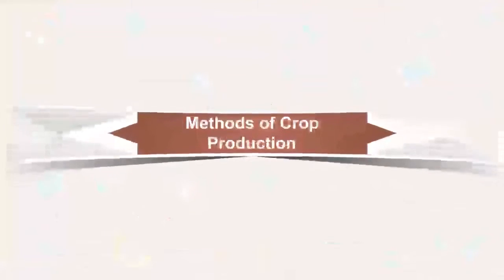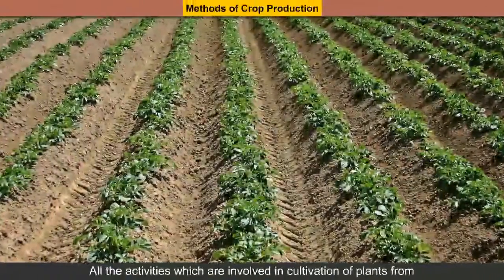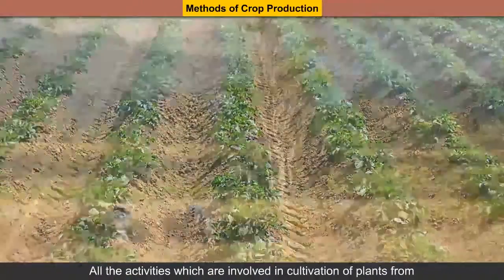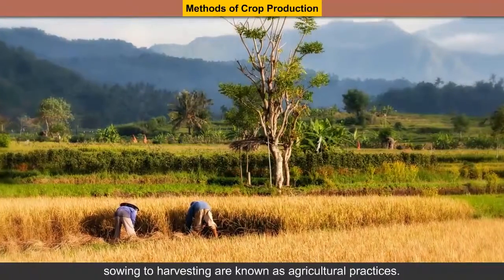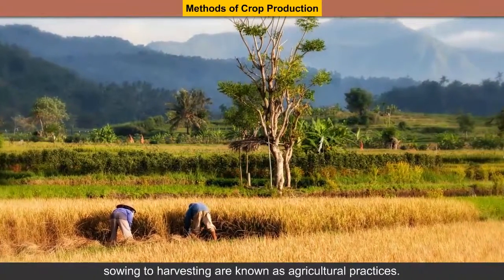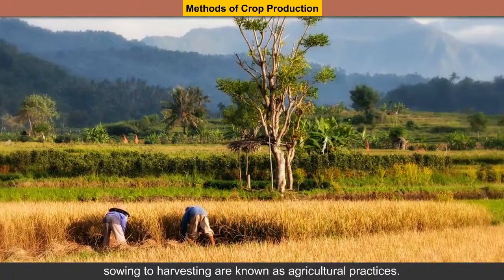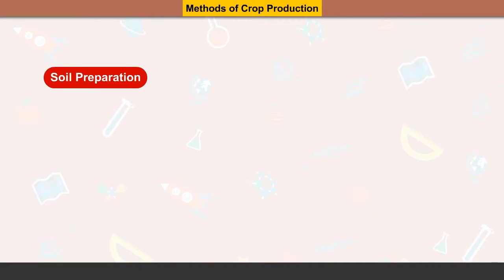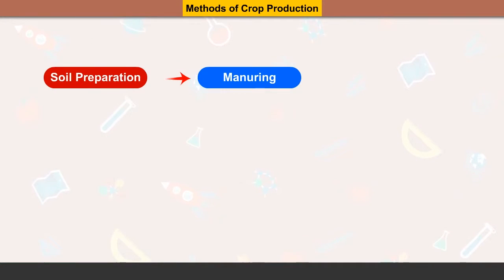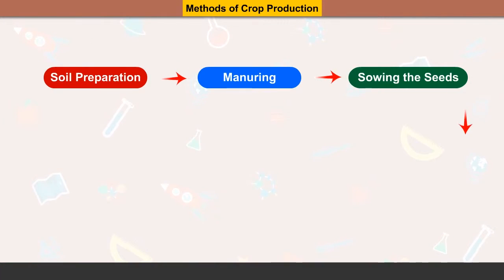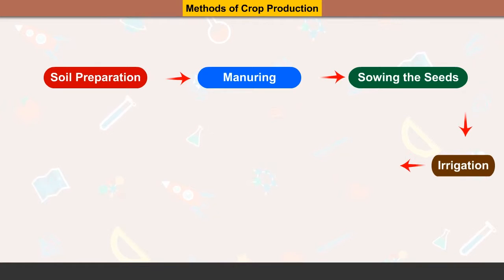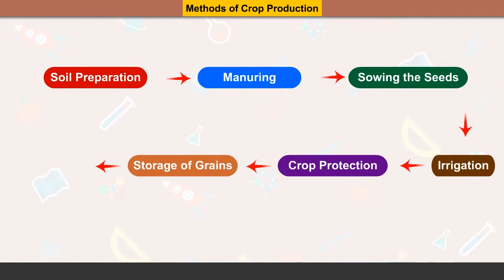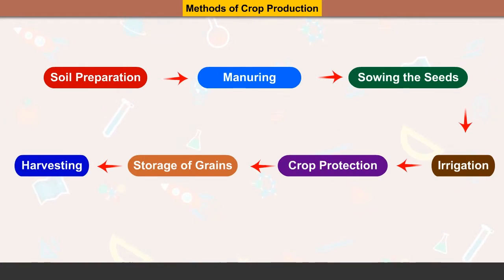Methods of crop production: All the activities which are involved in cultivation of plants from sowing to harvesting are known as agricultural practices. These include soil preparation, manuring, sowing the seeds, irrigation, crop protection, storage of grains, and harvesting.